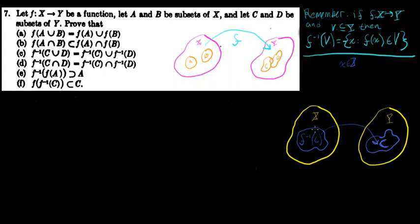So pictorially, this is all the elements in the set X that are mapped by F and end up in the set C, where C is a subset of Y, and F is mapping X to Y. Given all of this, let's use this to help us prove 7C.